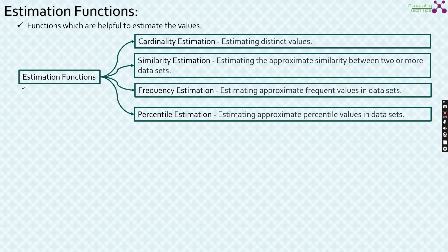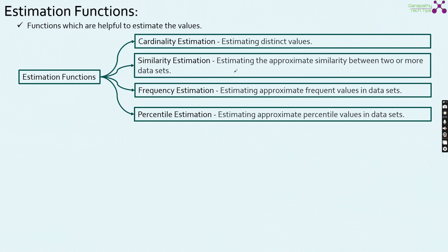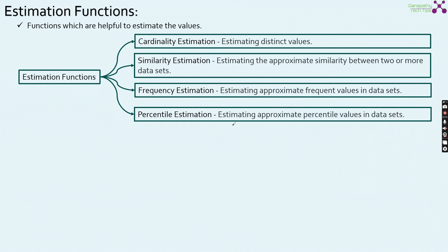Predominantly, Snowflake supports four different types of estimations: cardinality estimation, similarity estimation, frequency estimation, and percentile estimation. Cardinality estimation is about estimating distinct values for a column in a table. Similarity estimation is about estimating the approximate similarity between two or more data sets. Frequency estimation is helpful in estimating approximate frequent values in the data set, and percentile estimation is helpful in estimating approximate percentile values in the data sets.